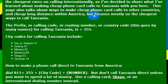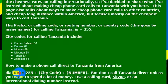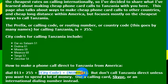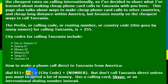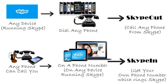If you wanted to call Tanzania directly, you could dial the country code 255. In order to get an outside international dialing line from a landline in the United States, you would dial 011, then the country code for Tanzania, which is 255, and then you would dial the phone number that you want to reach. So the country code for Tanzania is 255.